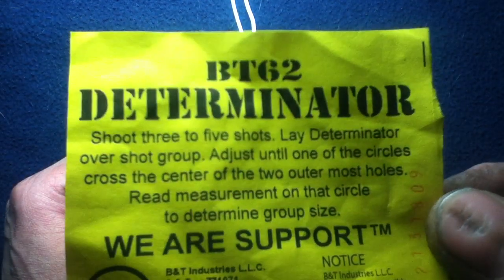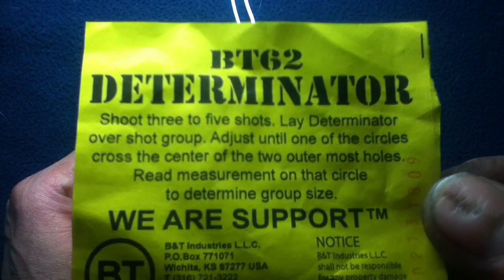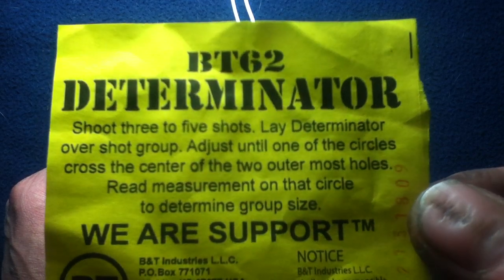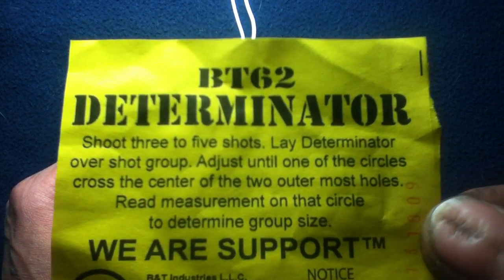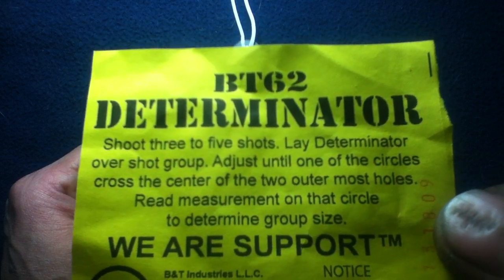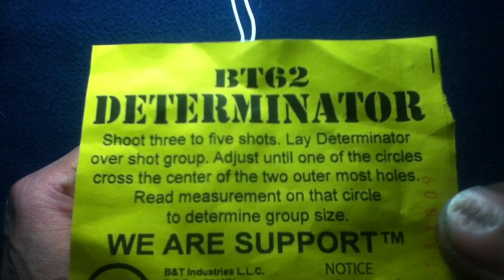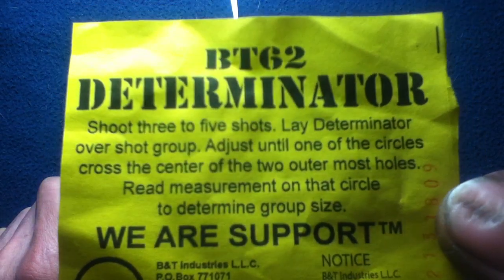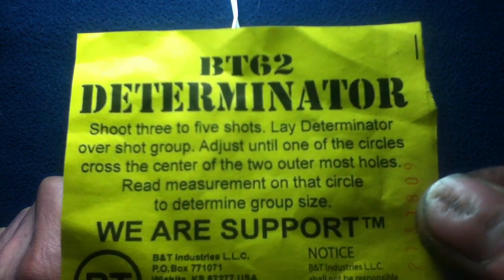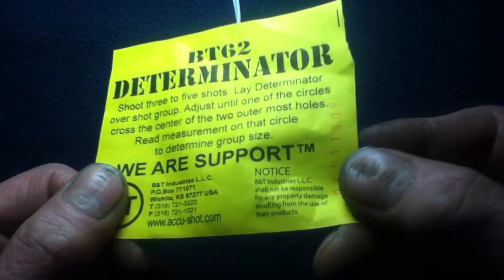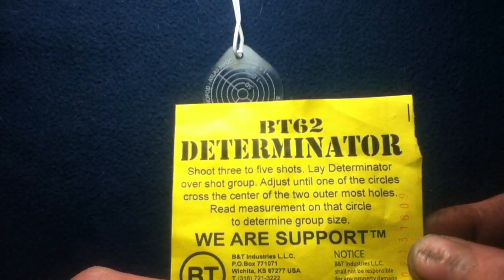So basically it's for examining your targets when you have fairly tight groups, but you want to measure them quickly and you don't have a ruler handy. Basically you shoot three to five shots, lay the determinator over the shot group, adjust until one of the circles across the center of the two outermost holes, read measurement on that circle to determine group size.